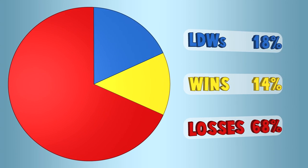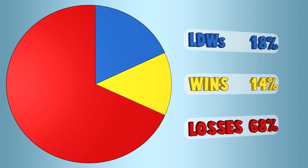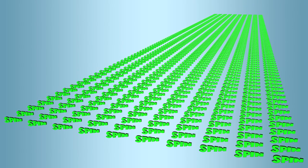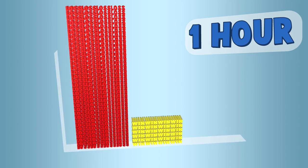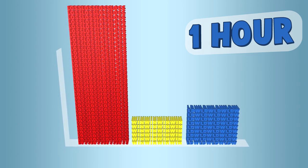On modern slot machines, players can make approximately 1,000 spins per hour. Thus, on average, in one hour, the player is exposed to 680 losses, 140 regular wins, and 180 LDWs.